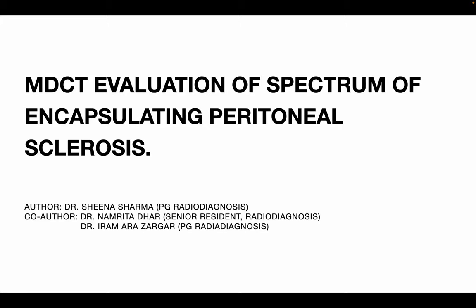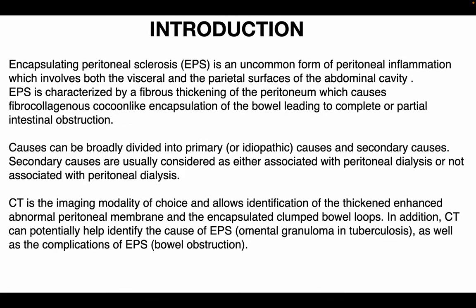The topic of this presentation is MDCT evaluation of the spectrum of encapsulating peritoneal sclerosis. Encapsulating peritoneal sclerosis is an uncommon form of peritoneal inflammation which involves both the visceral and the parietal surfaces of the abdominal cavity. It is characterized by fibrous thickening of the peritoneum which causes fibrocollagenous cocoon-like encapsulation of the bowel, leading to complete or partial intestinal obstruction.